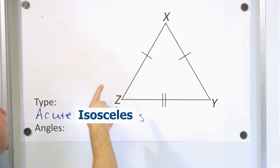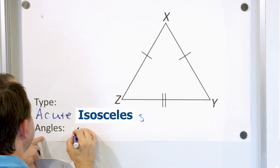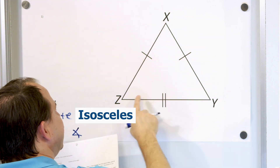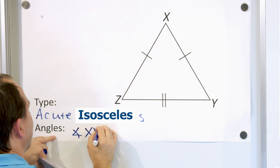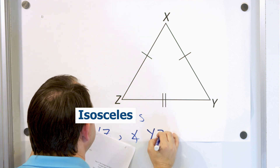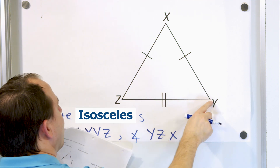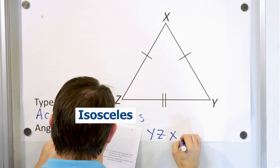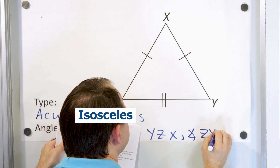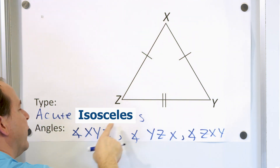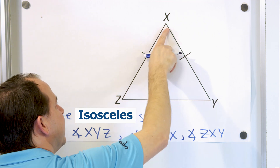Next, let's name all of the angles in this triangle for practice. We have angle XYZ, which is this angle here. We have angle YZX, which is this angle here. And we have angle ZXY, which is this angle here. Notice that the middle letter is always the vertex — the pointy part — of each angle.